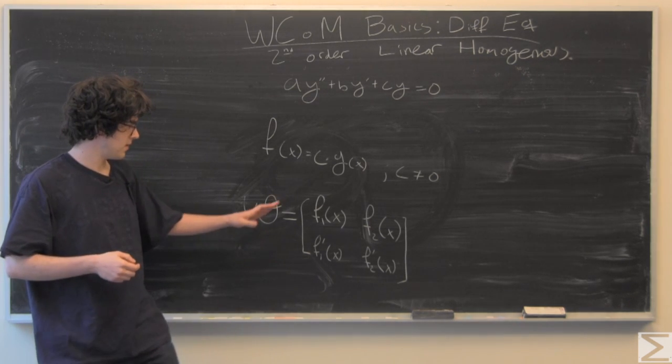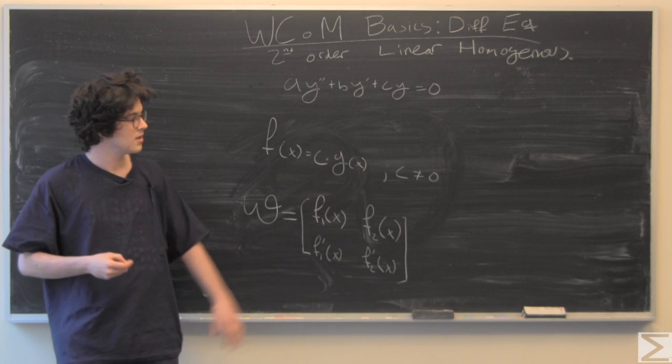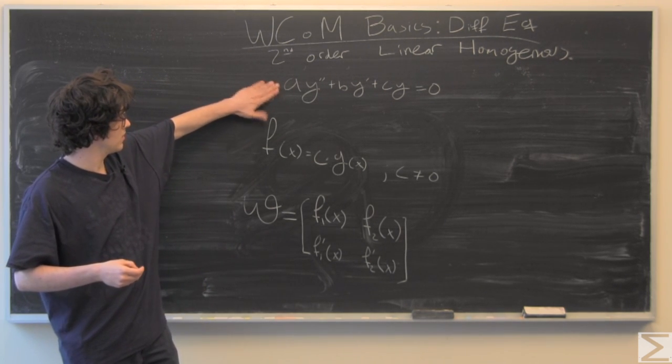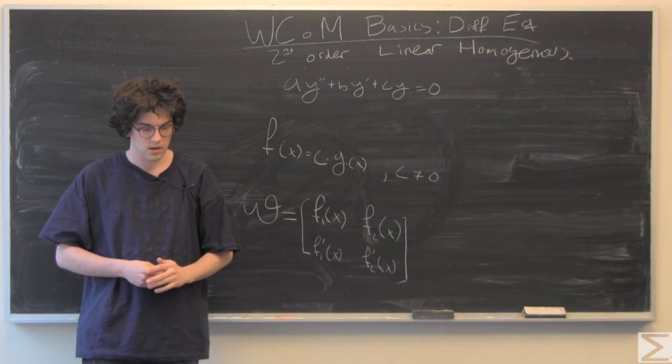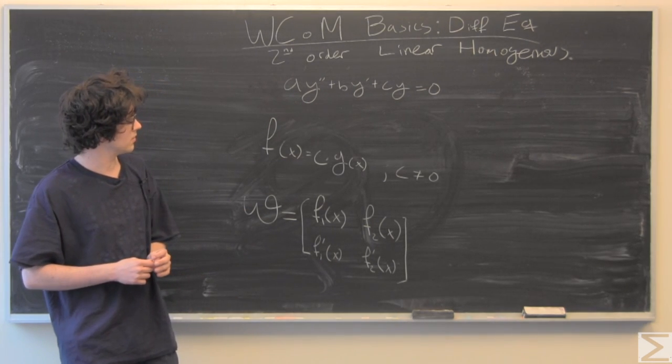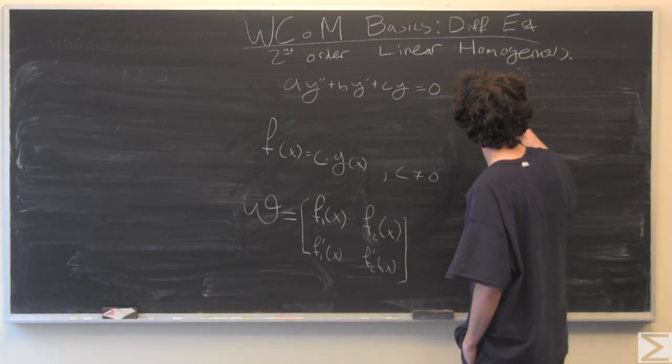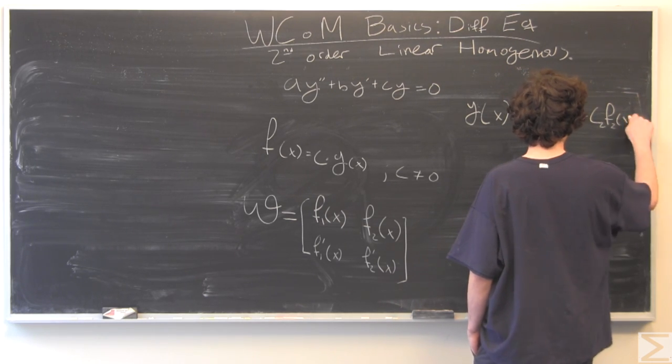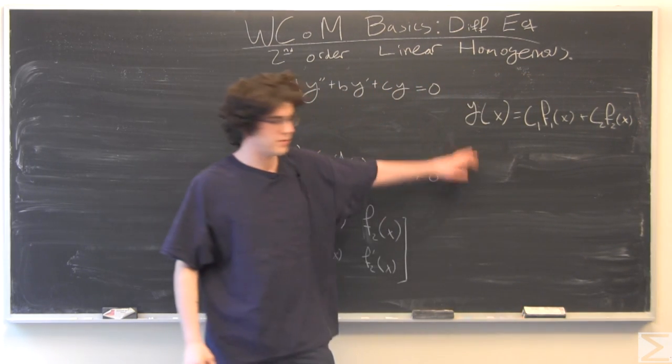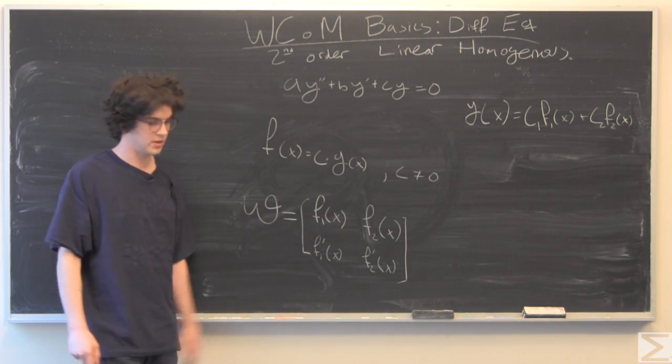If F1 and F2 are linearly independent, then we have a solution that will fit into the solution to this, and the solution looks like this. We have y of x equal to some linear combination of our functions F1 and F2.